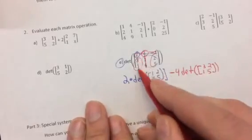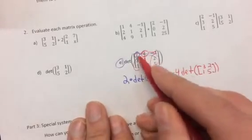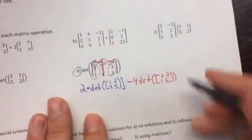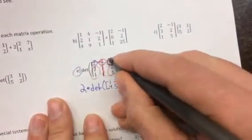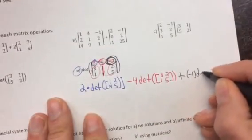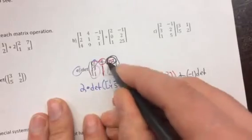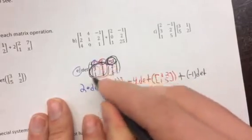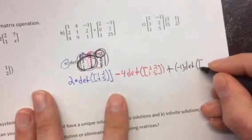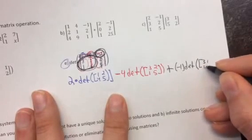That is the determinant of the left over matrix once we crossed out the row in the column the four was in. And the last one is going to be plus. We're going to use the last number in the column which is negative one times the determinant of the left over matrix which is right here after we cross out the row in the column. So it's the determinant of 3, 1, 1, 4.